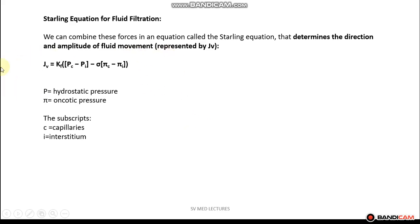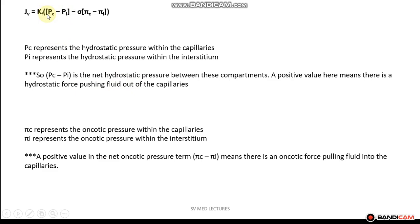Now let's take a look at the Starling equation again. Jv represents the direction and amplitude of fluid movement. P represents hydrostatic pressure, pi represents oncotic pressure, the subscript c represents capillary, and the subscript i represents the interstitium. So Pc represents the hydrostatic pressure in the capillaries, whereas Pi represents the hydrostatic pressure in the interstitium. The difference between these two values is the net hydrostatic pressure. For a positive net hydrostatic pressure, the capillary hydrostatic pressure must be greater than that of the interstitium, causing fluid to move from the capillaries into the interstitium.